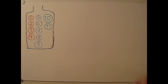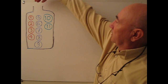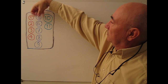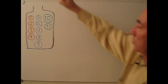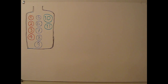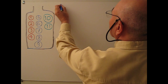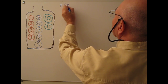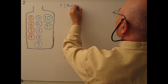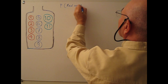I close my eyes, put my hand in and mix it, then randomly draw a ball. What is the probability of drawing either a red or green ball? Let's find P(red or green).